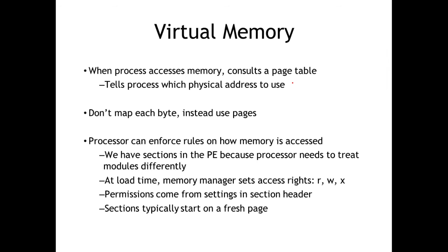The PE format — the portable executable format — is your typical format that a binary is in when it executes on a Windows machine. What happens then is those certain sections, those segments we talked about, need to be mapped into memory. When we load those into memory, we put them in pages. Those pages are a certain size — maybe four kilobytes. Those pages have permissions set, so if a section needs to be read-only, that page is set to read-only. That way the CPU can read from that address space but can't modify it. Pages can have certain access rights set: read, write, and execute.